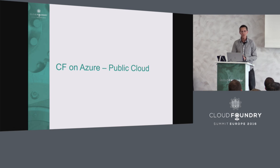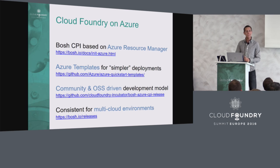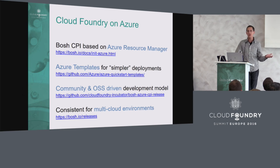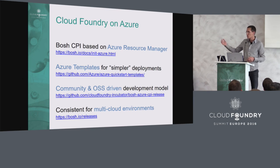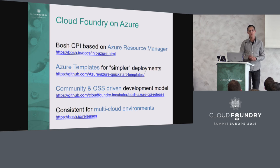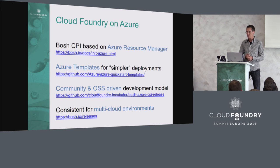Cloud Foundry on Azure — where we are today. We have released a CPI implementation for BOSH that helps you spin up a Cloud Foundry cluster on Azure and perform automated management operations against it. That CPI implementation is all open source; we are developing it as part of the Cloud Foundry Incubator project, doing pull requests into their GitHub repository. It is under active development, getting improved on a weekly and monthly basis. For example, we already have Diego in our CPI implementation.